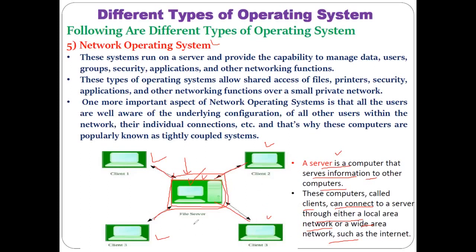Different client computers can share information from the file server. Clients can get access to different files, hardware devices like printers, security applications, and other networking functions from the server. A network is formed, and the network operating system is installed on it, making this sharing possible. Each client computer has its own CPU, RAM, memory, and operating system. The network operating system runs on the server and provides the capability to manage data, users, groups, security, applications, and other networking functions.